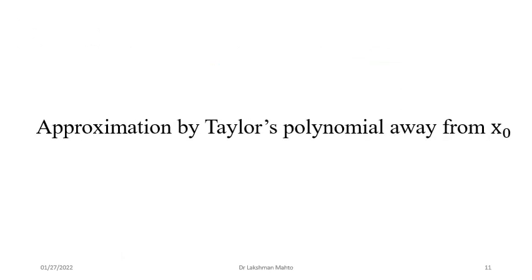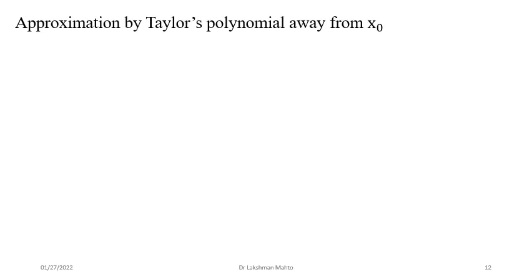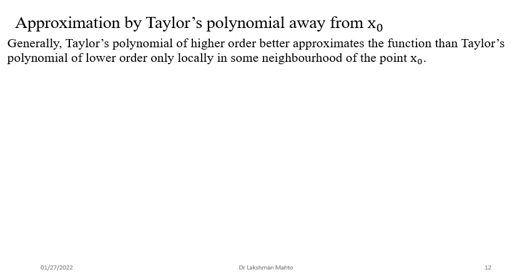We now discuss the behavior of Taylor polynomials when you go away from x₀. If you try to approximate a function in the neighborhood of x₀ and go further away, the situation is not so fine. Taylor polynomials of higher order generally give better approximation than lower-order ones — but only in some local neighborhood of x₀. If you go away from x₀, the approximation may not be accurate.